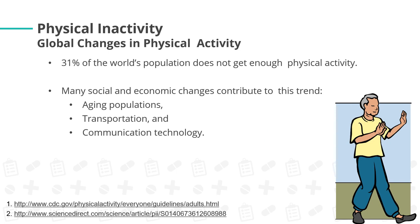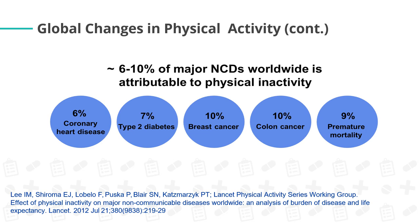The next risk factor is physical inactivity. 31% of the world's population does not get enough physical activity. Many social and economic changes contribute to this trend, such as aging populations, transportation, and communication technology. According to the study of Lee et al., 6–10% of major non-communicable diseases worldwide is attributable to physical inactivity: 6% for coronary heart disease, 7% for type 2 diabetes, 10% for breast cancer, 10% for colon cancer, and 9% for premature mortality.